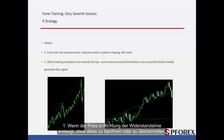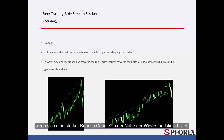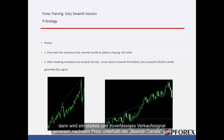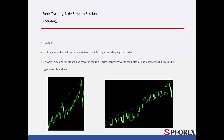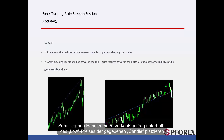Notification 1: When price rises towards the resistance line without touching or crossing anything, if a powerful bearish candle forms near the resistance line, then a powerful and reliable sell signal is generated after price goes lower than the bearish candle. On the left graph, price could not cross the gradient resistance line, and after it went up near this line, a dark cloud or engulfing candle formed. Thus, a trader could place a sell order below the low price of the given candle.